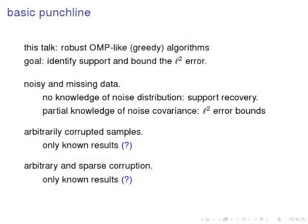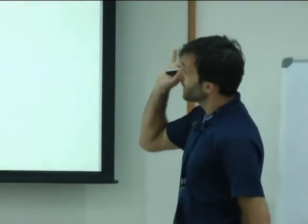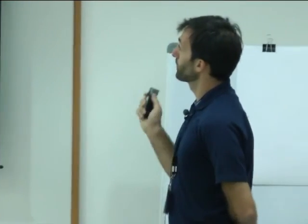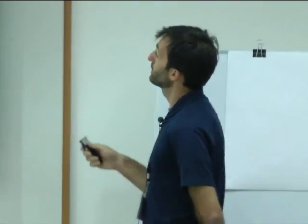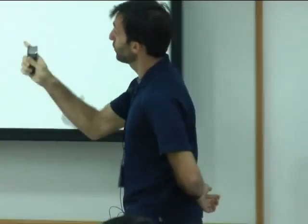And then similarly for the case where just N1 elements of each column of X and Y are corrupted. So these are the three models. And here's the kind of basic punchline for this talk.